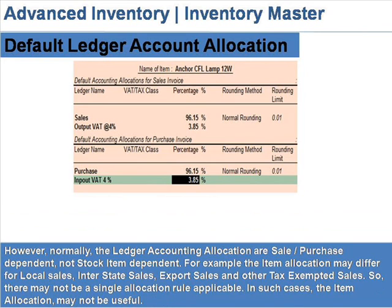However, normally the ledger accounting allocation is sales or purchase dependent, not stock item dependent. For example, the item allocation may differ for local sales, interstate sales, export sales, and other exempted sales — so there may not be a single allocation rule applicable. In such cases, the item allocation may not be useful.